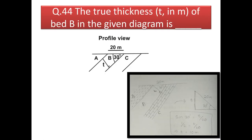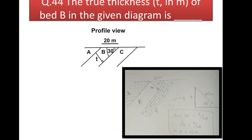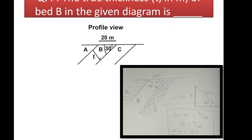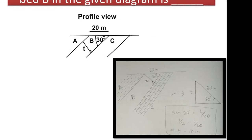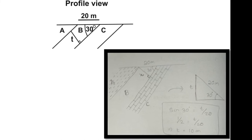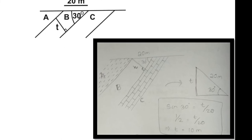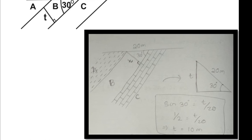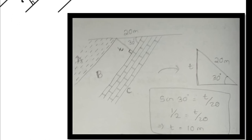Next question: the true thickness of bed B in the given diagram. Redrawing the diagram for convenience and applying trigonometric formulas: tan 30° = T/20 (where 20 is the measured width), giving the value of T = 10 meters.